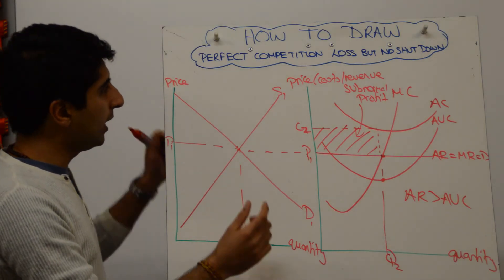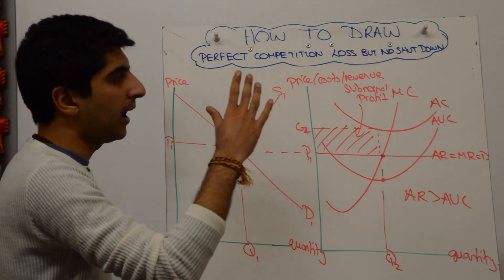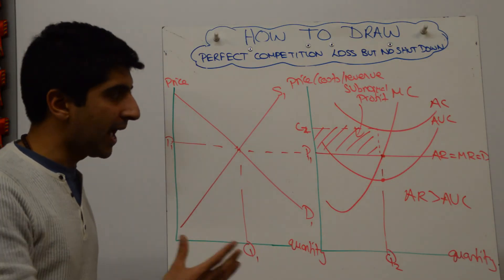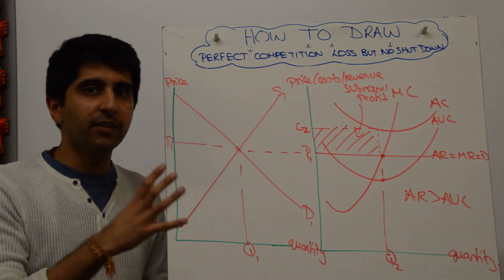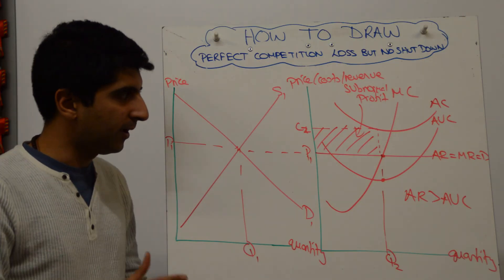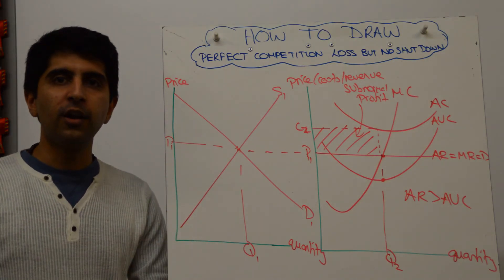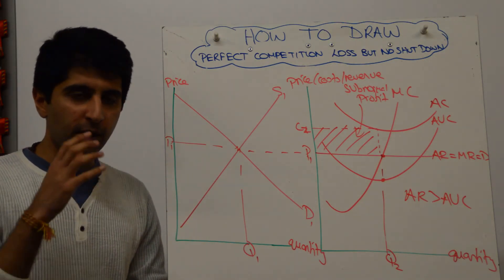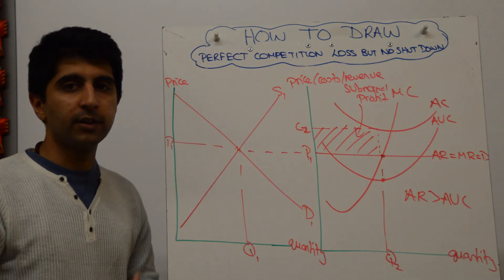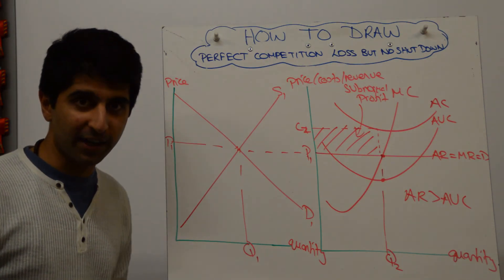Have we labelled our axes? Yes. Have we labelled our curves? Yes. Have we labelled all our equilibria? Yes. So we've aced the diagram — everything we need to do — and it's detailed and good looking. That's how you draw this diagram: subnormal profit in the short run, but still continuing. Thanks for watching. See you in the next video.